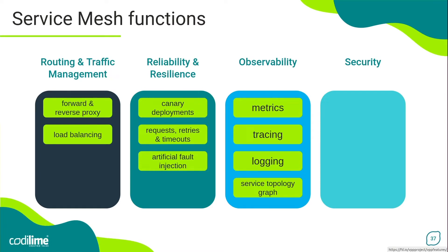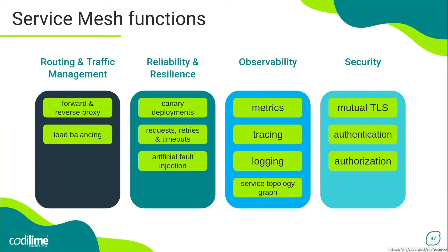Integration with different observability backends such as Prometheus for monitoring, Zipkin or Jaeger for tracing, or FluentD for logging should also be supported. Another useful feature is drawing service topology graphs. The last group is about security. A service mesh should ensure secure communication between service instances through mutual TLS functionality. Additionally, advanced authentication and authorization mechanisms can be provided, allowing the definition of sophisticated policies for enforcing fine-grained security control within the cluster of microservices.